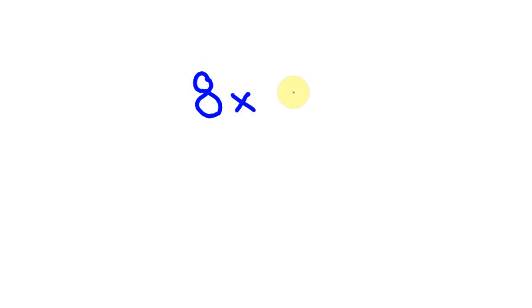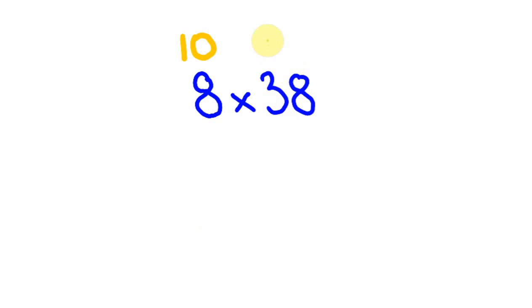So let me give you an example: say I asked you to work out 8 times 38. We're going to use estimation here. A number close to 8 that's nice is 10; the number close to 38 that's easy is 40. You're also going to notice the numbers have common factors — 10 goes into 40 quite nicely, and that's important when choosing reference numbers.